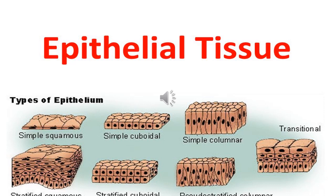The columnar cells have different levels of nuclei, which is called pseudo-stratified columnar epithelium. Then in the last slide, you see another type of arrangement called transitional epithelium, in which on the topmost apical layer you see large dome-shaped cells with large nuclei in them. That is the transitional epithelium.